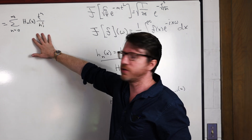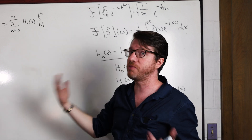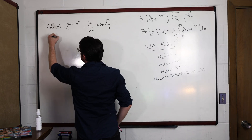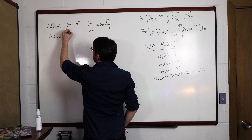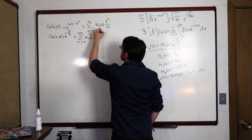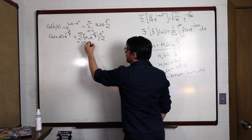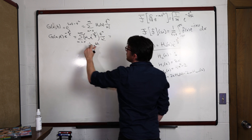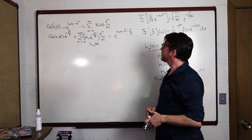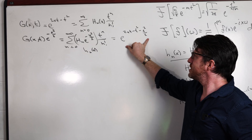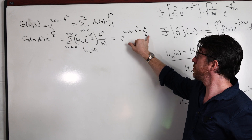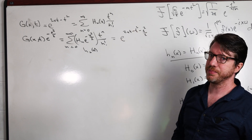We need to turn the generating function of the Hermite polynomials into the generating function of the Hermite functions. We just multiply by the extra factor e^{−x²/2}, giving a new generating function g(x,t)·e^{−x²/2}, which equals the sum from n=0 to infinity of h_n(x)·e^{−x²/2}·t^n/n! — these are our Hermite functions, little h_n(x). This simplifies to e^{2xt − t² − x²/2}. Now we're going to apply the Fourier transform to this expression, which is essentially a shifted Gaussian and will give us another Gaussian.